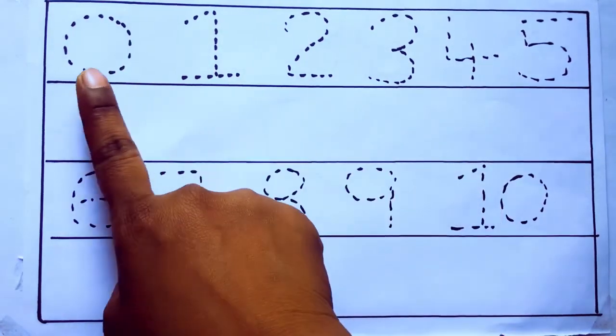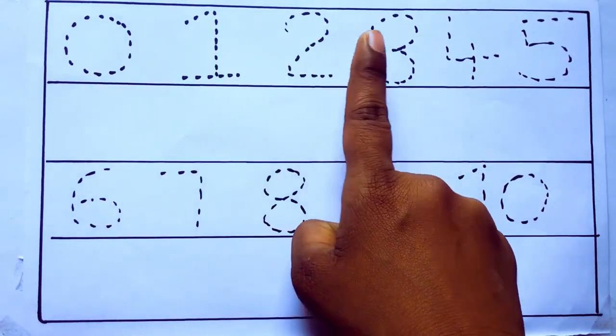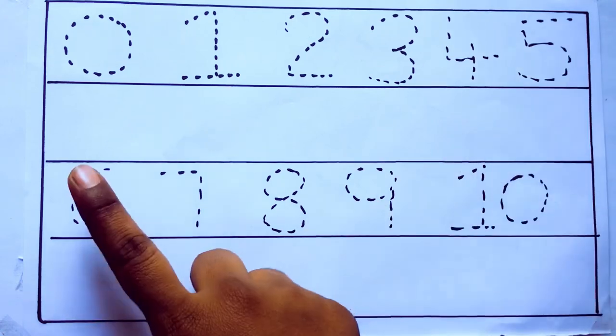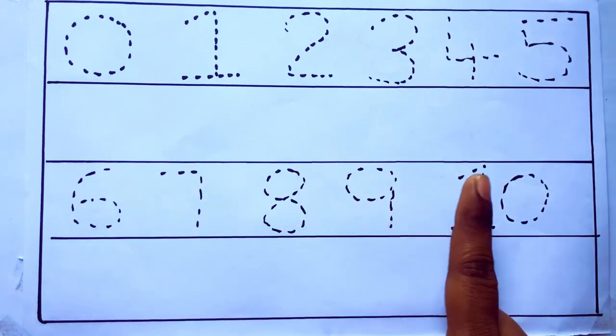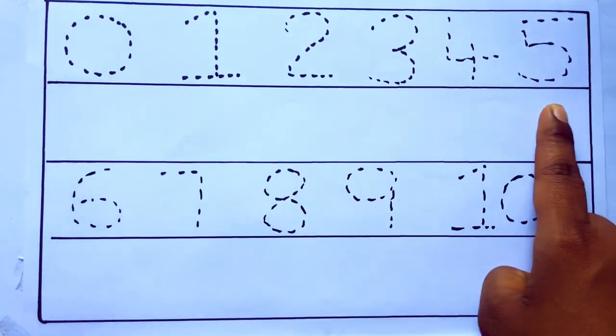0 to 10: 0, 1, 2, 3, 4, 5, 6, 7, 8, 9, 10, and rewriting the numbers.